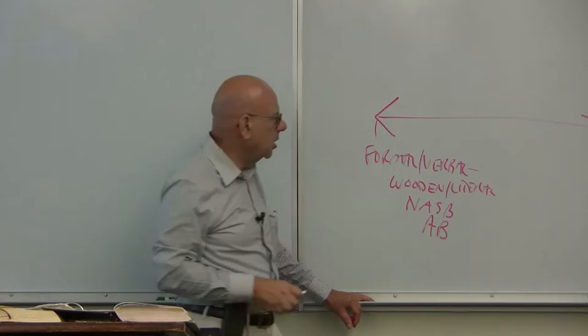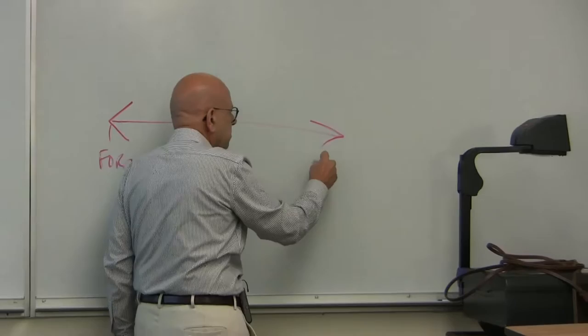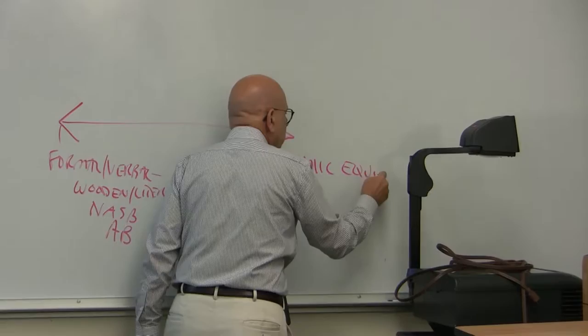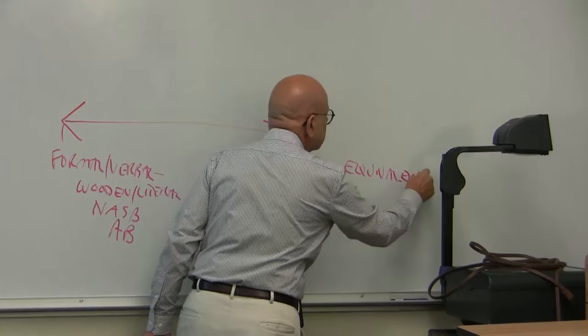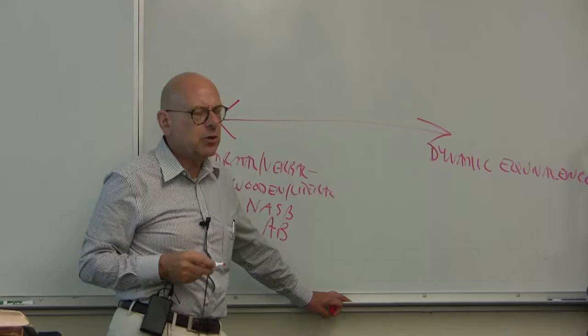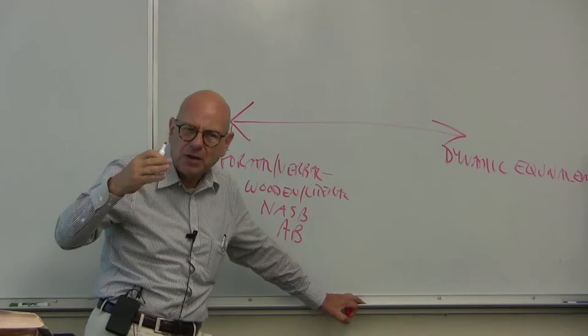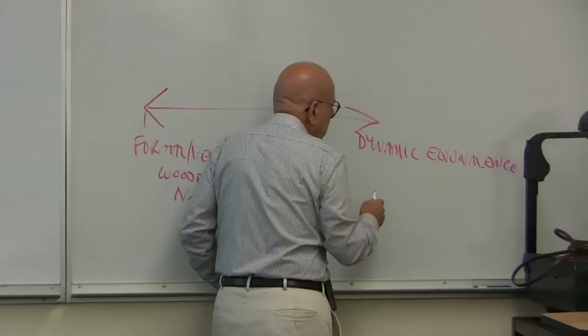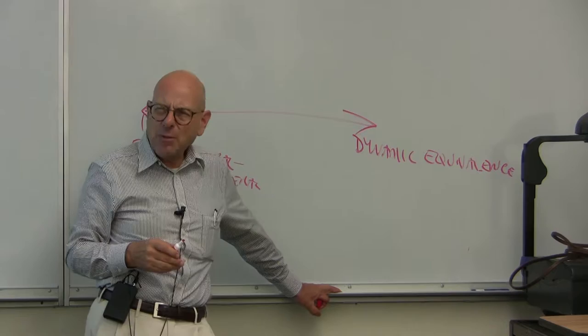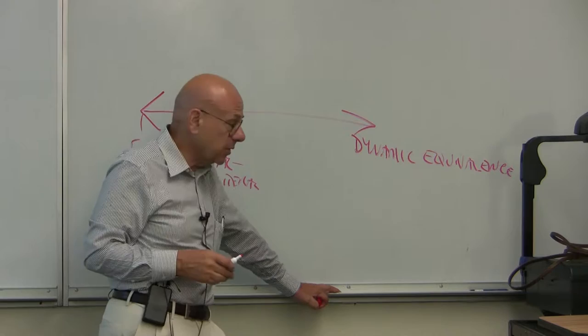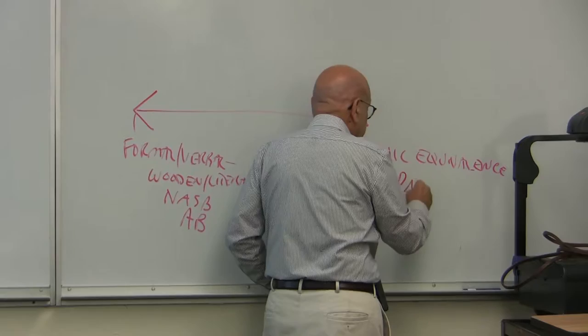On the other end of this continuum we have dynamic equivalents. The view here is that translation involves not identifying the best word-for-word correspondence, but actually translating whole units of thought — getting a sense of the meaning of a whole sentence or paragraph and then translating that sense into English. This is represented by translations from the American Bible Society or United Bible Societies, and the extreme example would be paraphrase.